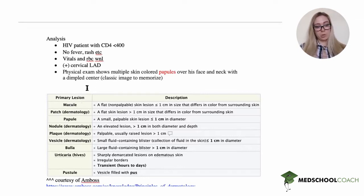A macule is a flat lesion less than one centimeter. A patch is a flat lesion greater than one centimeter. A papule is a small raised lesion less than one centimeter, and a nodule is an elevated lesion greater than one centimeter.